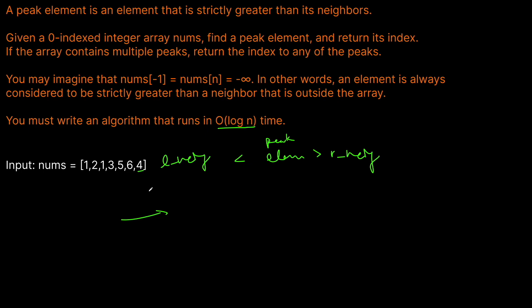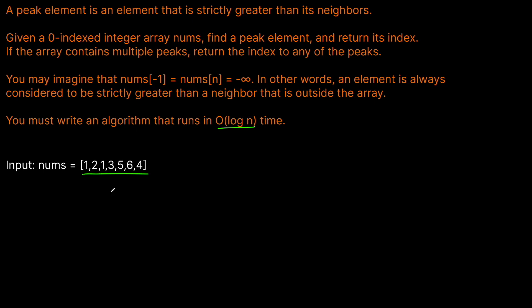Since we need log n time and we have an array, we typically use binary search. But as you can see, this is not a sorted array — parts of it are sorted but the rest isn't. We can't just sort it because that would ruin the original order and we'd lose the correct index. So how can we do this? Let's think about what it means for a peak to occur.